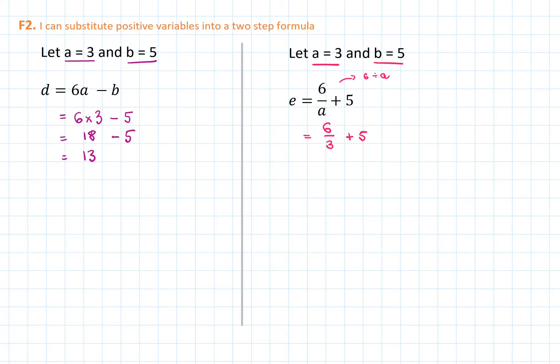we find that 6 over 3 plus 5. Again, because of our order of operations, we will do the division first. 6 divided by 3 is 2. So we can write that 2 plus 5, which will be 7. So the value of e is 7 in this case.